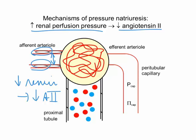This has two major effects. One is a change in starling forces in the peritubular capillaries. Since angiotensin's vasoconstrictive effect is primarily on the efferent arteriole of the glomerulus, lower levels of angiotensin II dilate the efferent arteriole and allow increased flow into the peritubular capillaries, resulting in increased capillary perfusion pressure. The increase in capillary hydrostatic pressure and corresponding decrease in oncotic pressure oppose and inhibit reabsorption of filtrate from the proximal tubule, allowing more excretion of sodium and water in the urine.